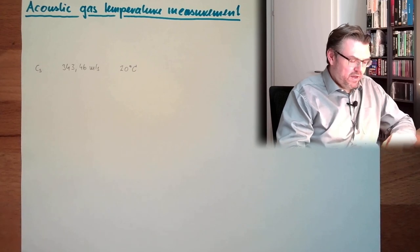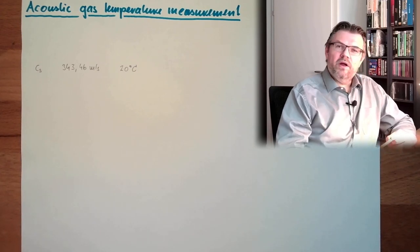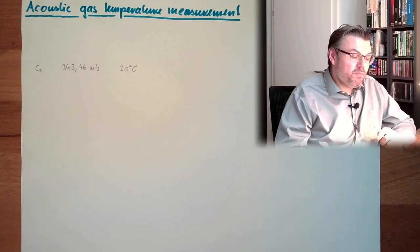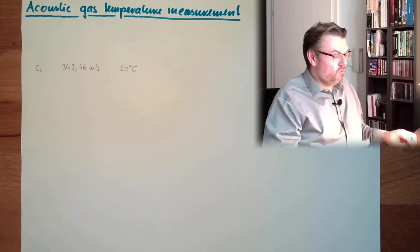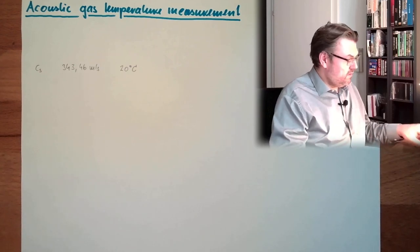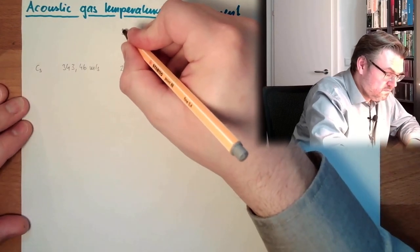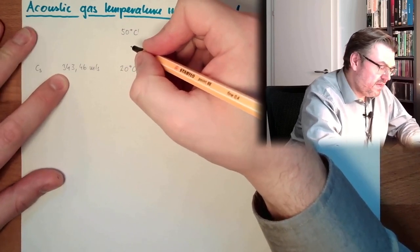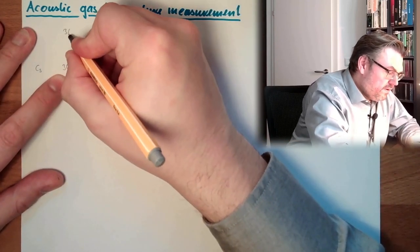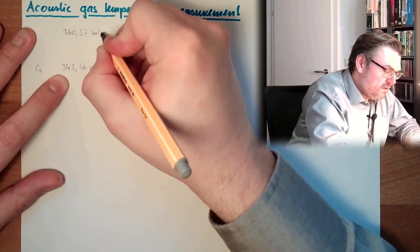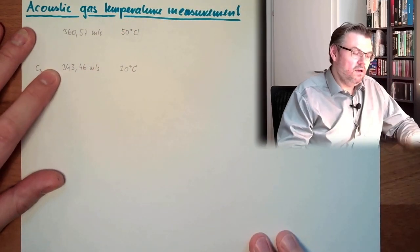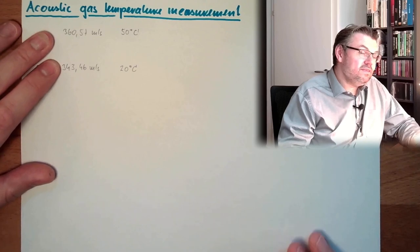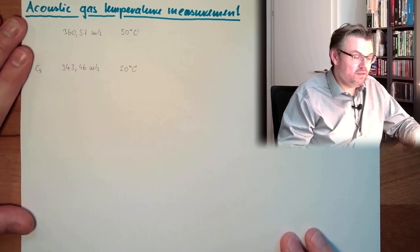Because the speed of sound is heavily depending on the pressure, or on the density actually of the material, this is depending on pressure and this is also depending on temperature. So for instance, if we have 50 degrees, the speed of sound is no longer 343 meters per second. It's already 360.57 meters per second. Now we're coming close to how these things are linked together, the speed of sound and temperature.